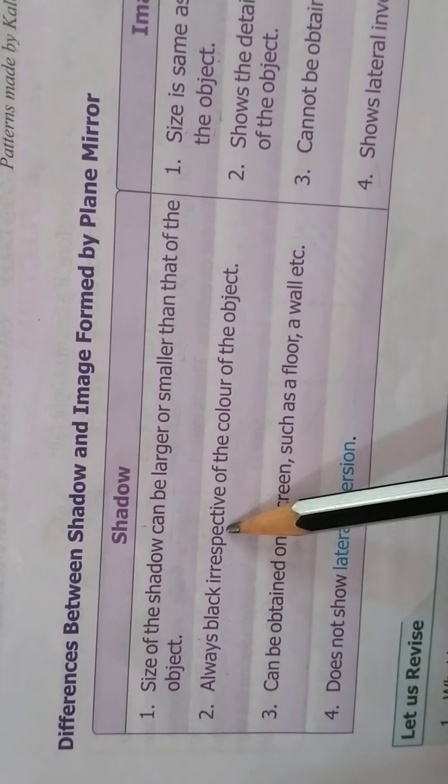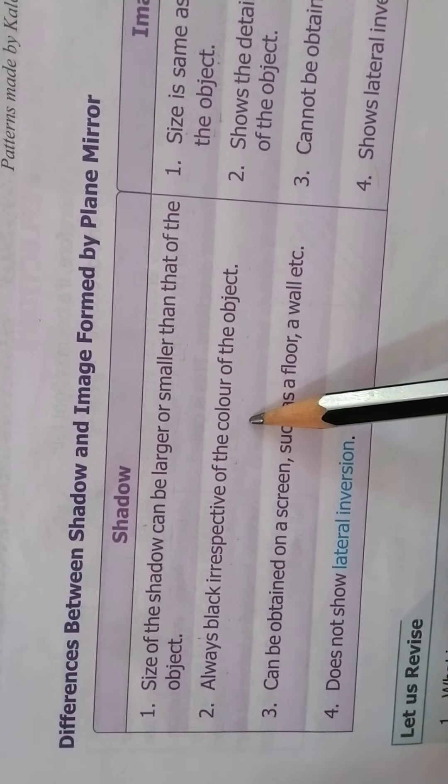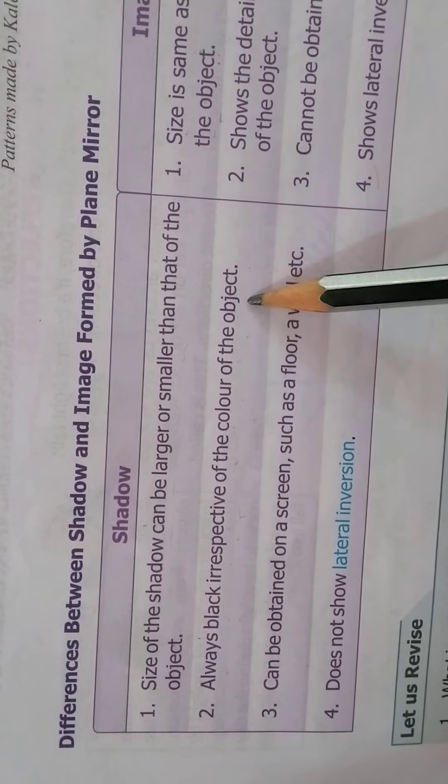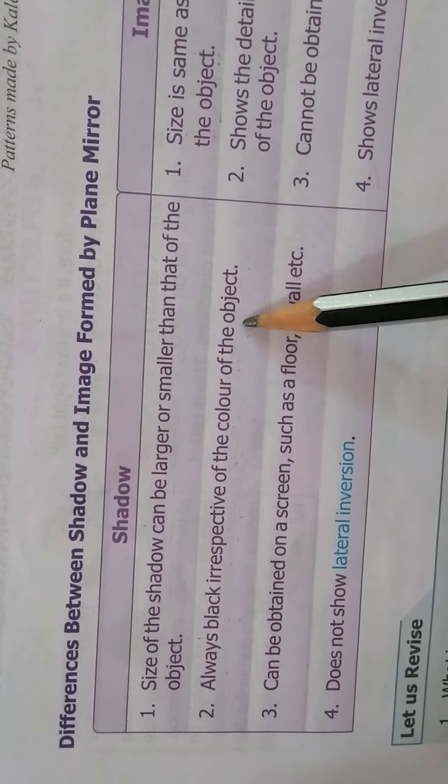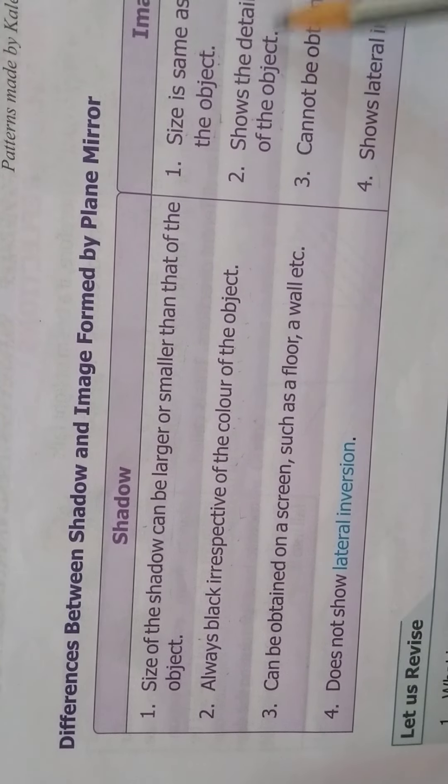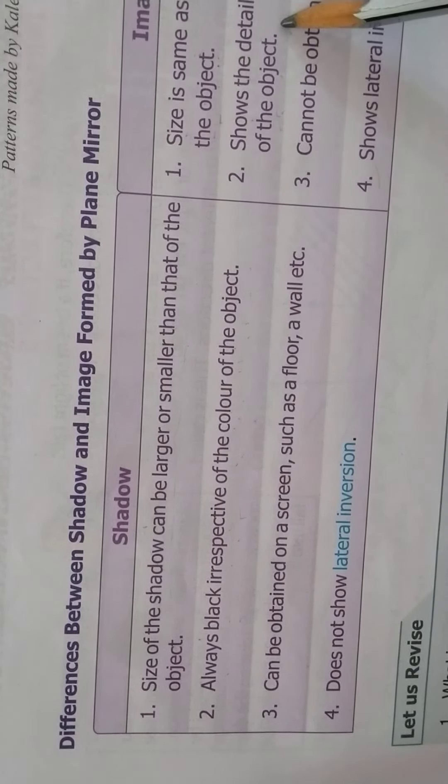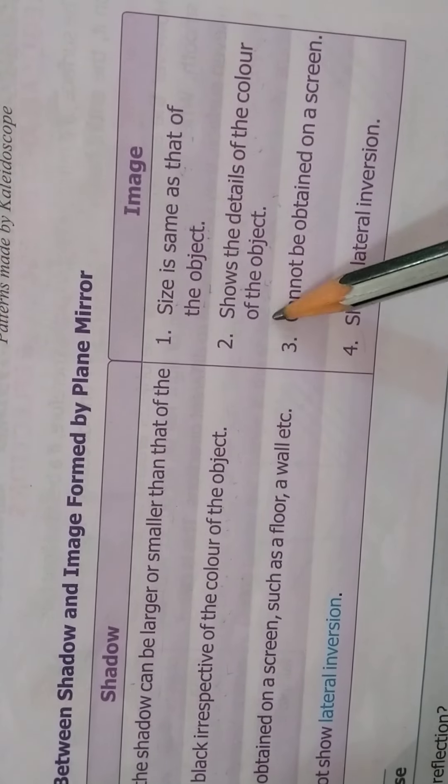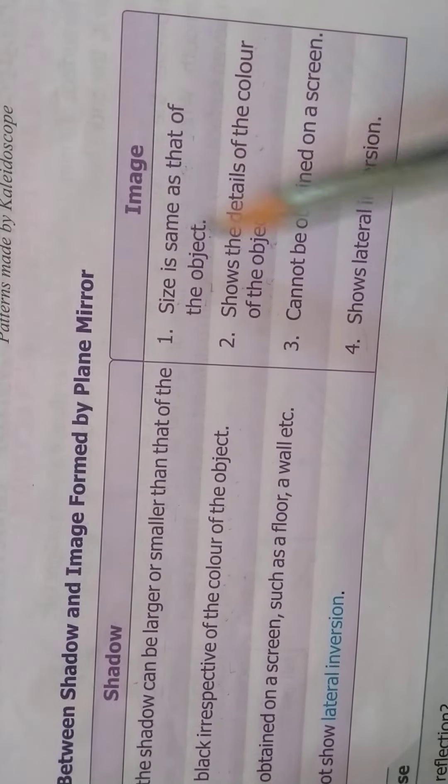Always black irrespective of the color of the object. Shadow is always black. Whatever the color of the object is there, but shadow will always be black. Shows the details of the color of the object. Images show the detail of the color of the object. Means the color of the object is also shown in image.